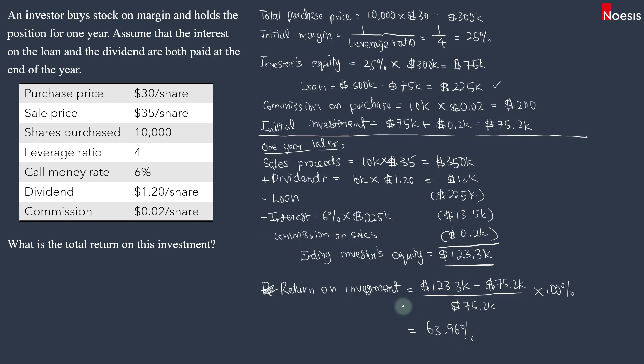If we were to invest without using any leverage, then what would the return be like? So the unlevered return will just be the change in price, which is $35 minus $30 plus the dividend of $1.20.